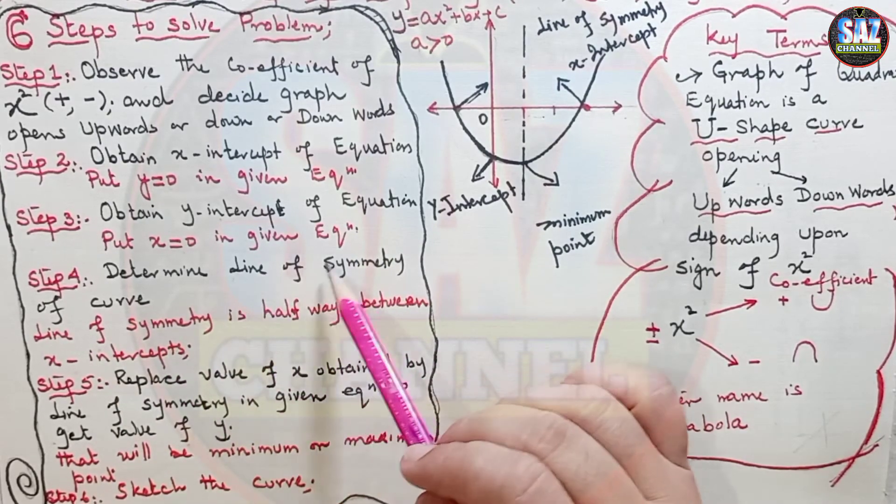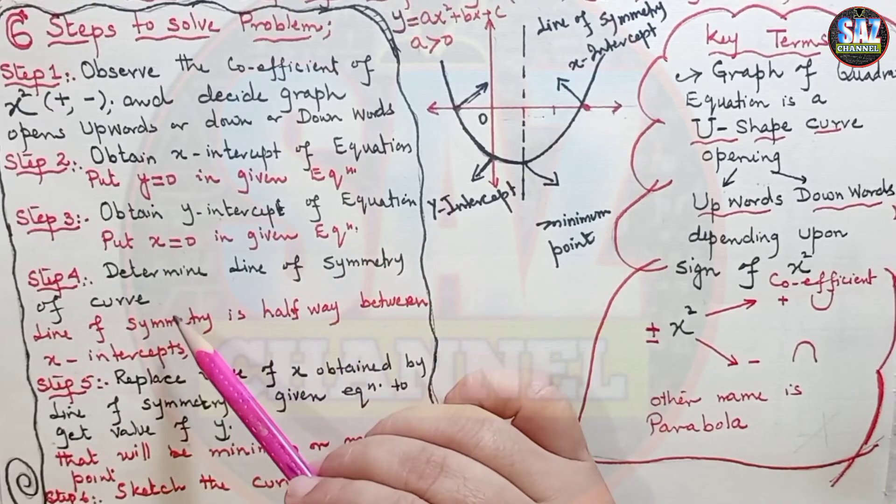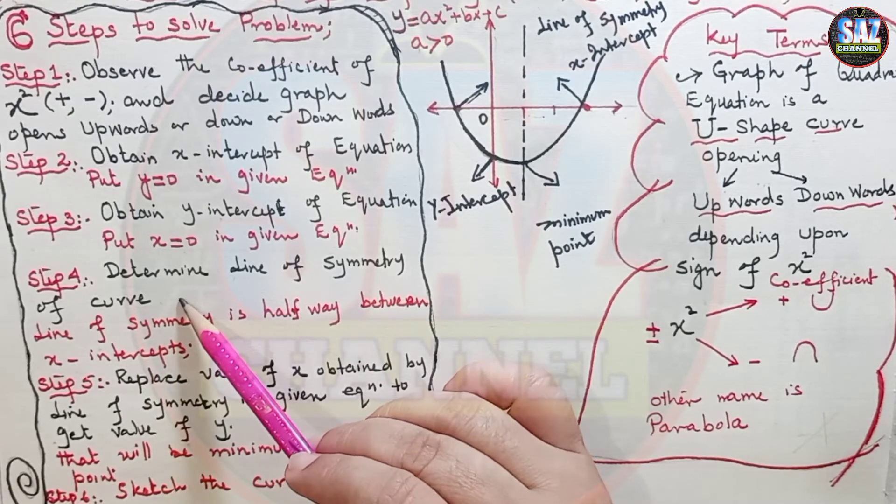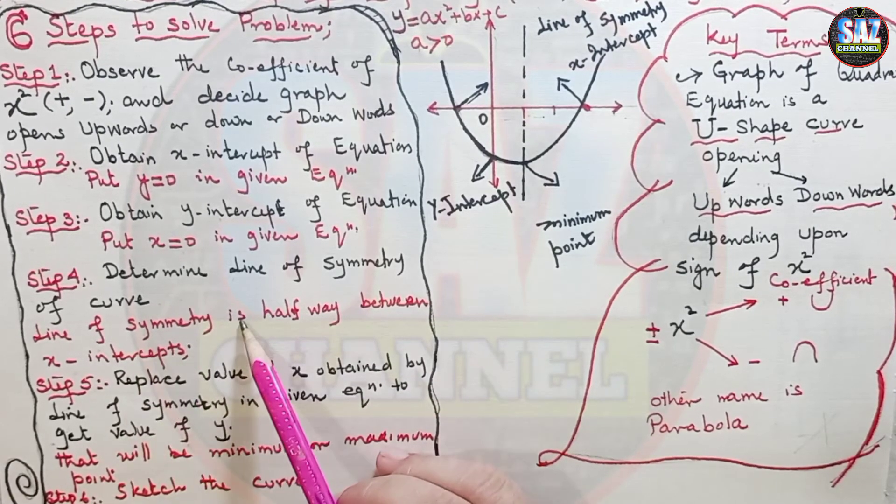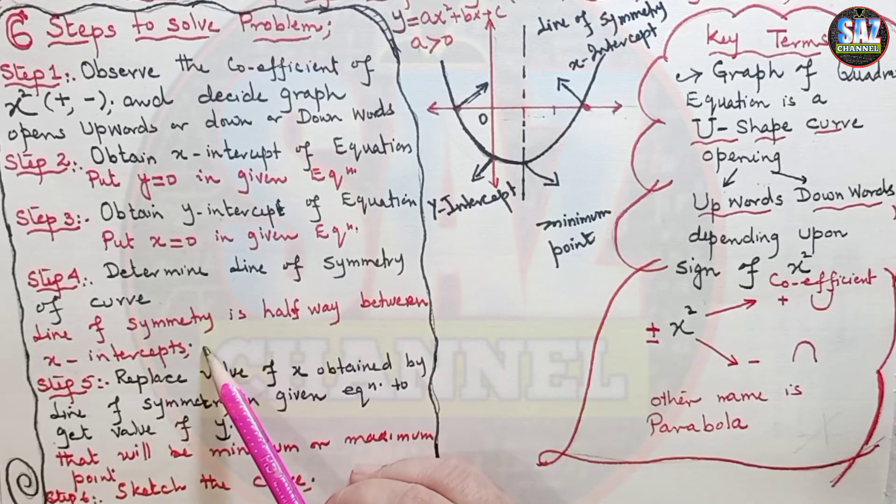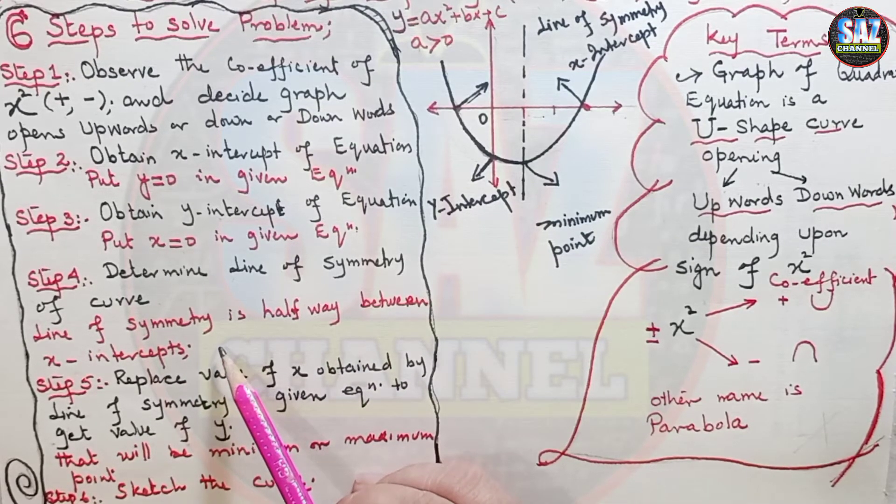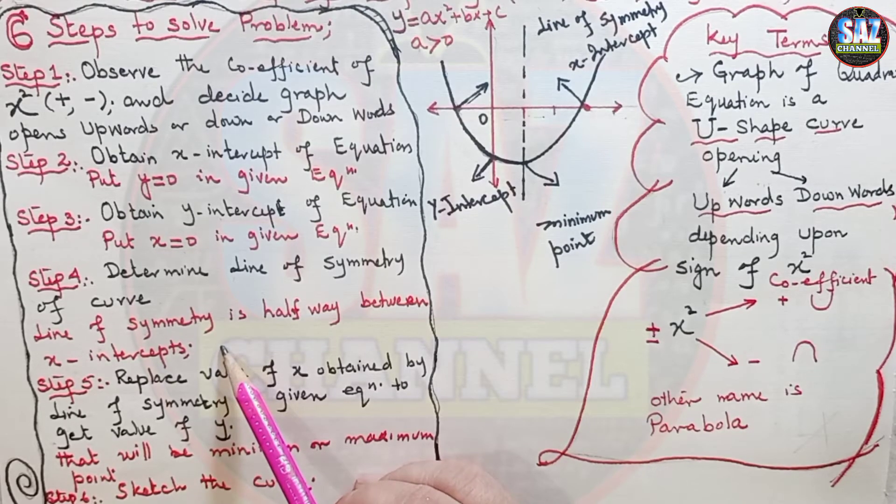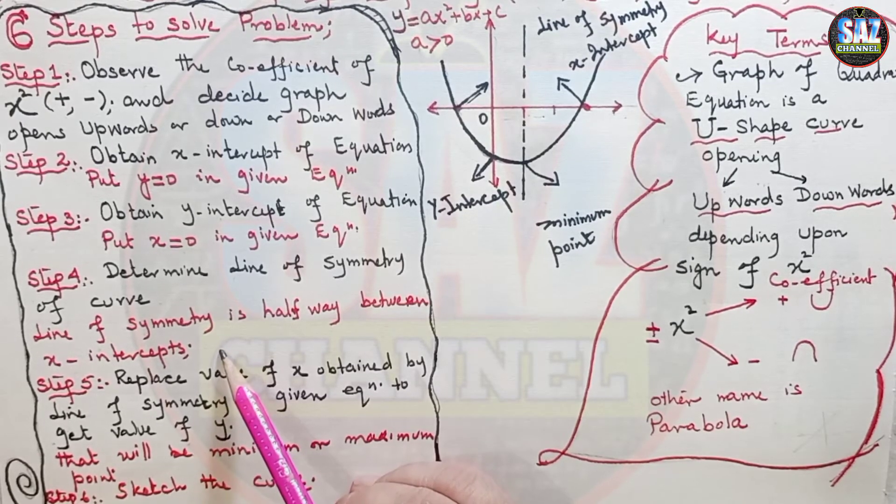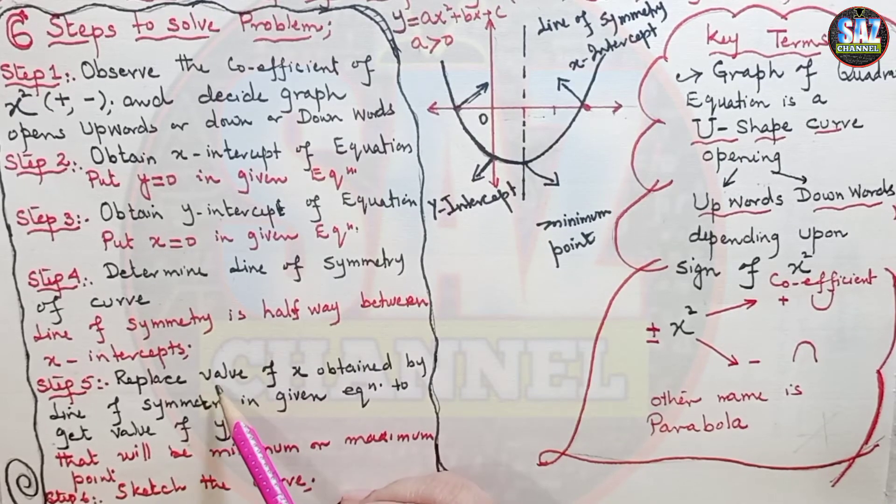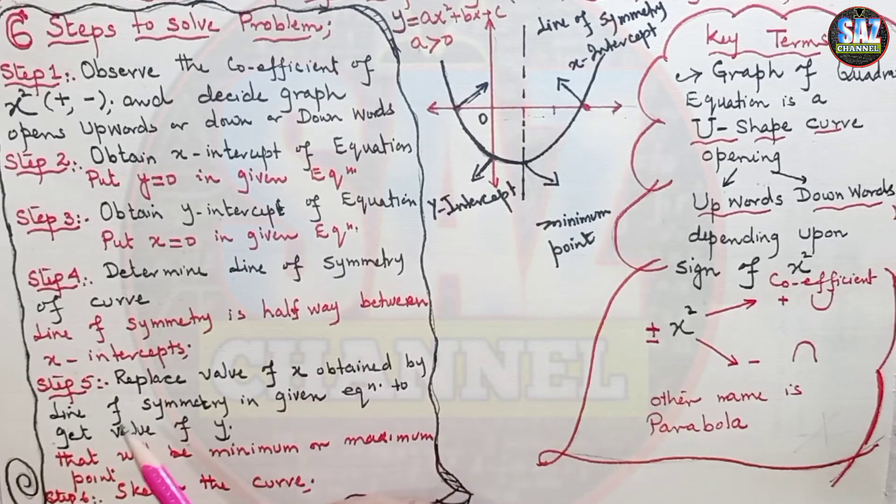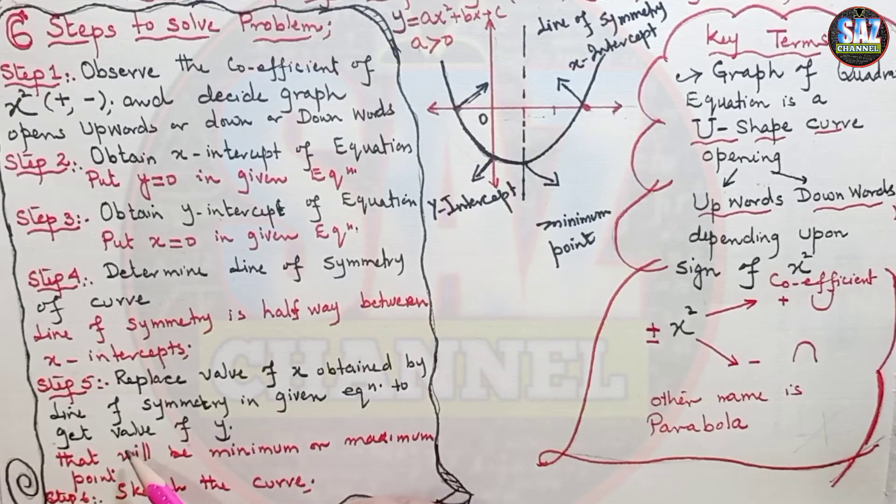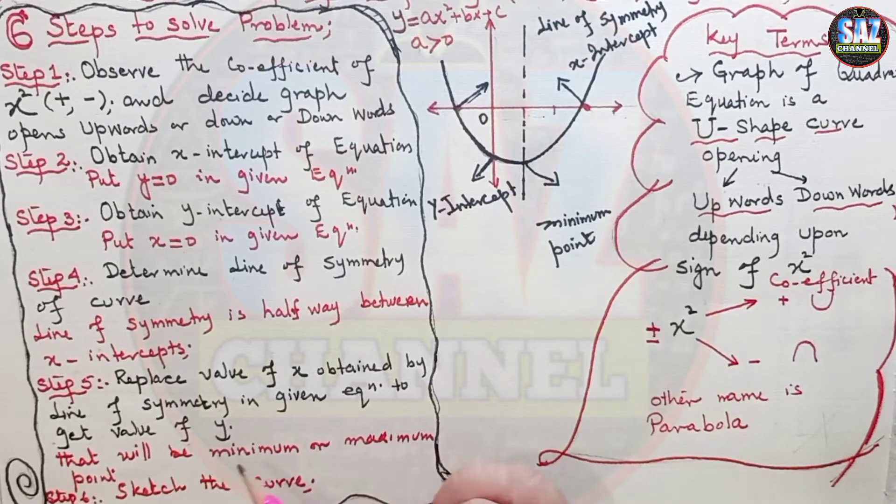Step four, determine the line of symmetry of the curve. How to find and how to decide the line of symmetry of the curve? Line of symmetry is halfway between x-intercepts. Or in easy words, whatever x-intercepts we are getting, we have to add them up and divide them by two. Replace the value of x obtained by line of symmetry in the given equation to get value of y. And that value of y or that point will be minimum or maximum point.